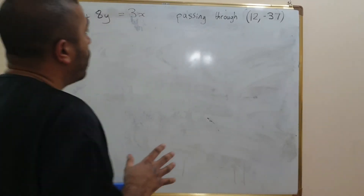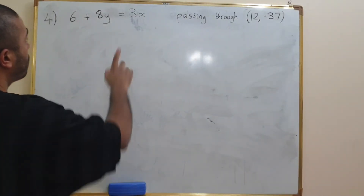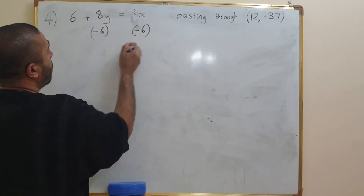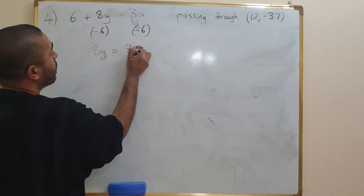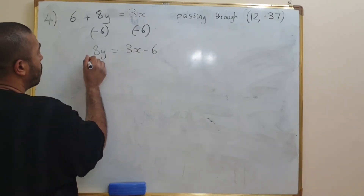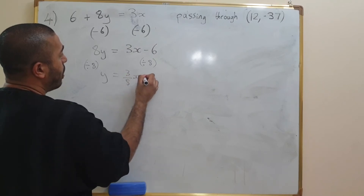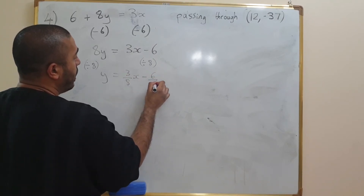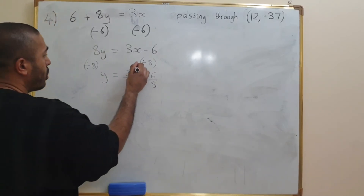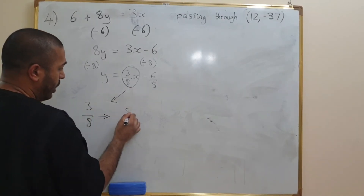The final question says find the line which is perpendicular to this line, passing through (12, negative 37). Let's rearrange: subtract 6 from both sides, leaving 8y equals 3x minus 6. Divide by 8 on both sides, giving y equals 3 eighths x minus 6 over 8. Now find the negative reciprocal of 3 eighths, which is 8 over 3. The first one is positive, so the second one has to be negative.